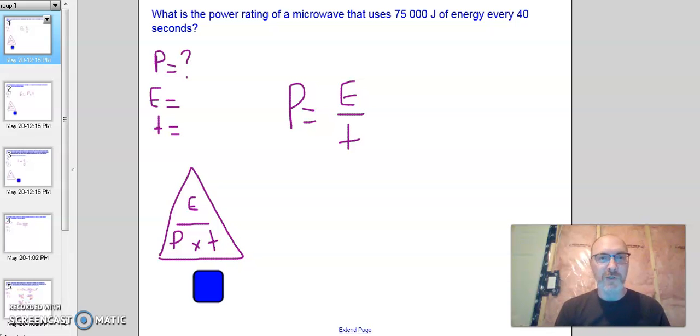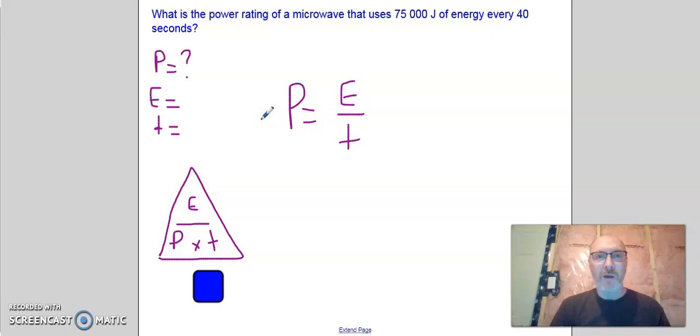So the first question here is, what is the power rating of a microwave that uses 75,000 joules of energy every 40 seconds? So we're asked for power, so we write down P equals the question mark. You write down what you're asked to find. Then we have to write down what we're given. So the energy, we're told, is going to be 75,000 joules, and the time, we're told, is 40 seconds.